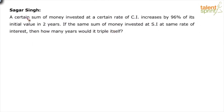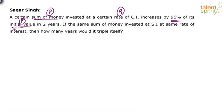So basically there is a certain sum of money which is nothing but the principal amount P, invested at a certain rate of compound interest. The rate is R. It increases by 96% of its initial value, and the initial value is always the principal amount P. So it increases by 96% of its value in two years — the time is two years.